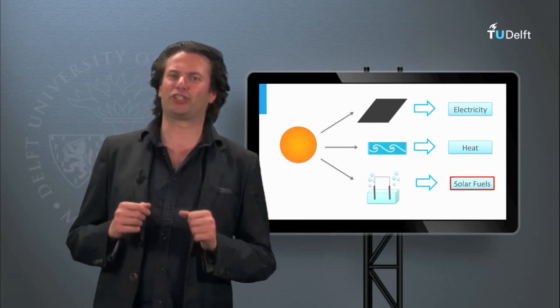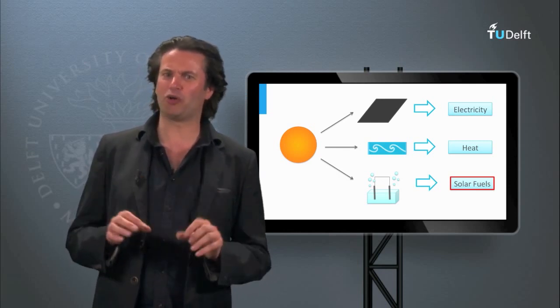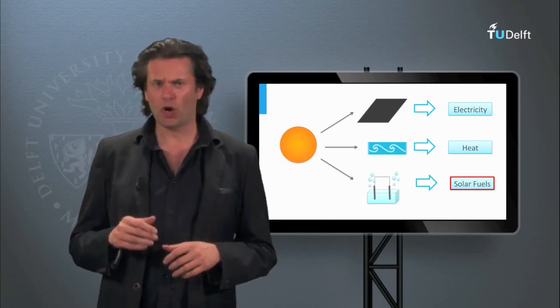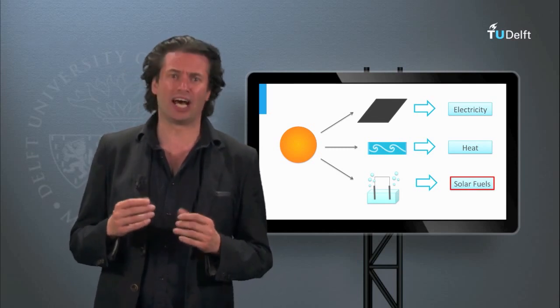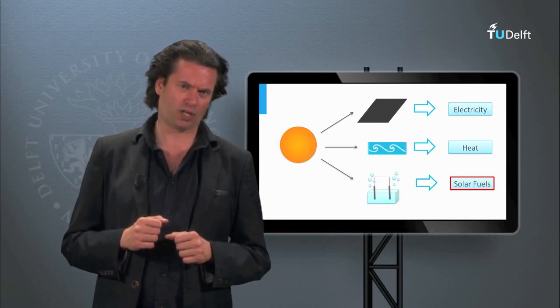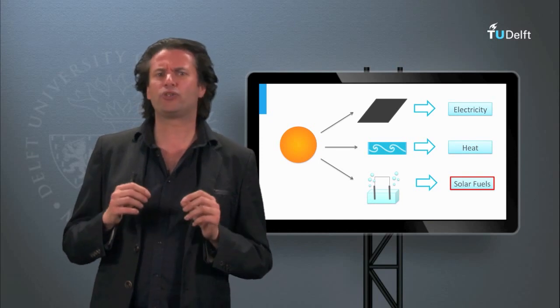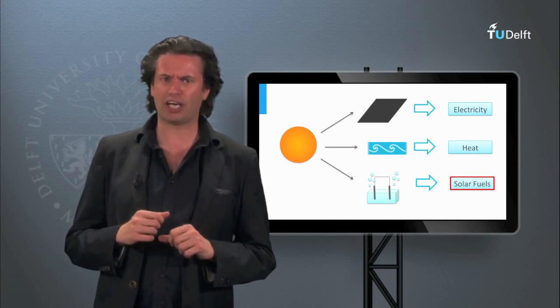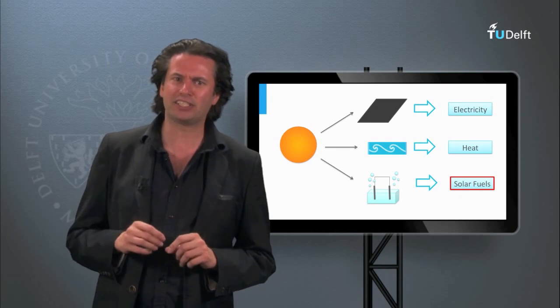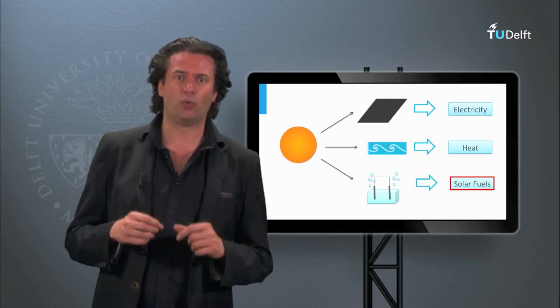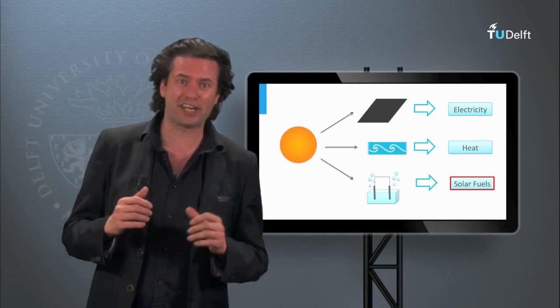This week I shall discuss different ways on how to use solar energy in a less conventional way. In past weeks we have discussed how to convert light into electricity. Also, in the previous blogs this week we talked about conversion of solar energy into heat. The last option is to convert solar energy into chemical energy, which allows us to directly create fuels.